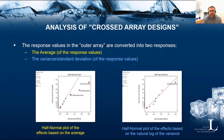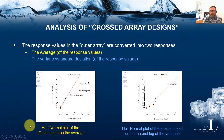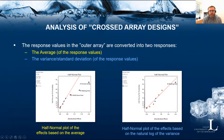From the outer array responses, we calculate the average response value and the variance or standard deviation of the response values, giving us two separate responses for the inner array design. The average response is used to figure out how to set control factors to achieve a certain target value, while the variance response is used to identify settings of the control factors that achieve minimum variance for the response.